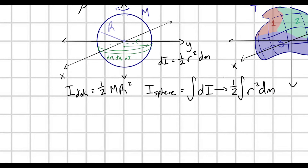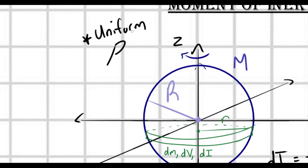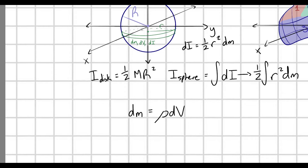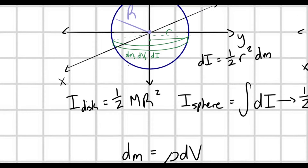But we can't just integrate with respect to dm — just like in the last videos, we need to convert this into something with spatial coordinates that I can actually integrate over this sphere. As I've done many times before, dm is equal to the mass density rho times dv.